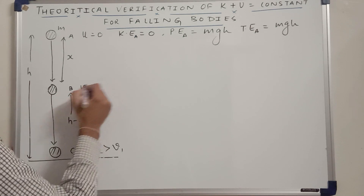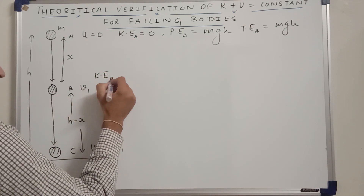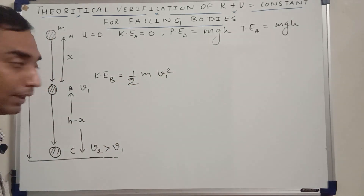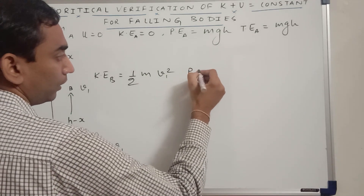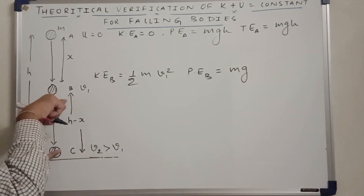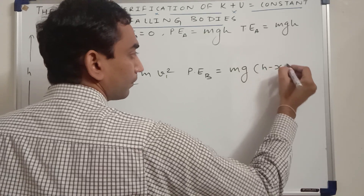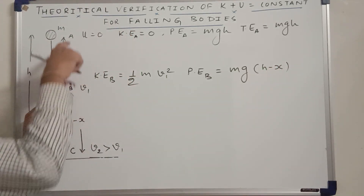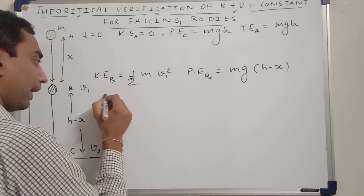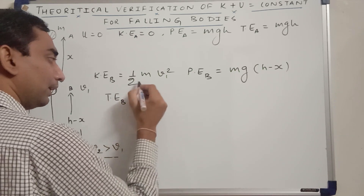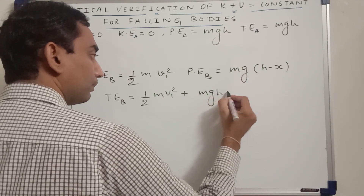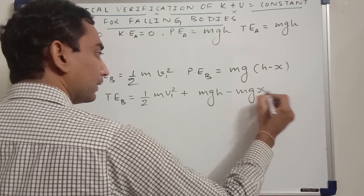At point B, the kinetic energy is equal to half M V1 squared. The potential energy of the ball at location B is M times G times the height above the ground, which is H minus X, since point B is at distance X below point A. The total energy at location B is therefore half M V1 squared plus MG(H minus X), which expands to half M V1 squared plus MGH minus MGX.